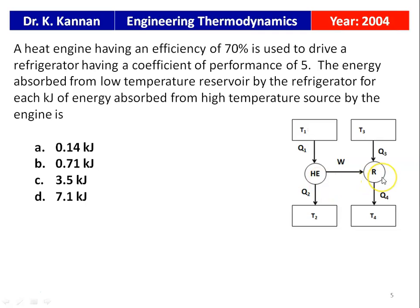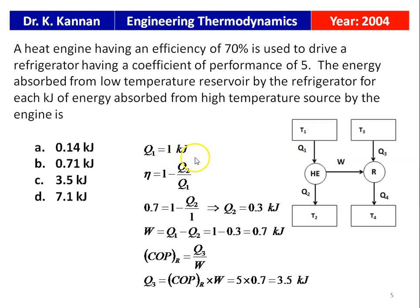This is the arrangement: a heat engine is driving a refrigerator. The heat engine takes Q1 of heat energy from a source at T1 and rejects Q2 to a reservoir at T2. The work produced by the heat engine is given to the refrigerator. Given Q1 = 1 kJ, efficiency = 0.7 = 1 − Q2/1, so Q2 = 0.3 kJ. Work done = Q1 − Q2 = 1 − 0.3 = 0.7 kJ.